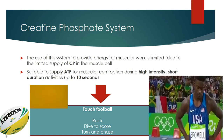In our touch football context, think about specific elements of touch football skills in play that require high-intensity, short duration effort for up to 10 seconds — not just running up and down the wing, but things like rucking, a dive to score, or a quick turn and chase. If you have your position in mind, think about when you are using the creatine phosphate system: as a link player, a middle player, or a wing player.